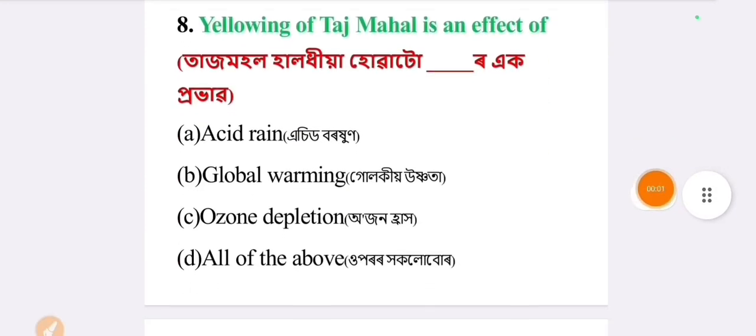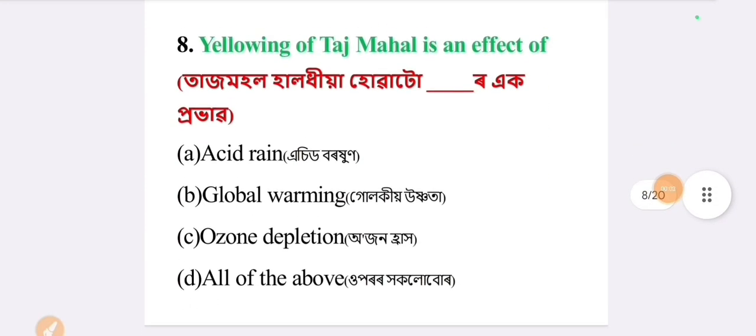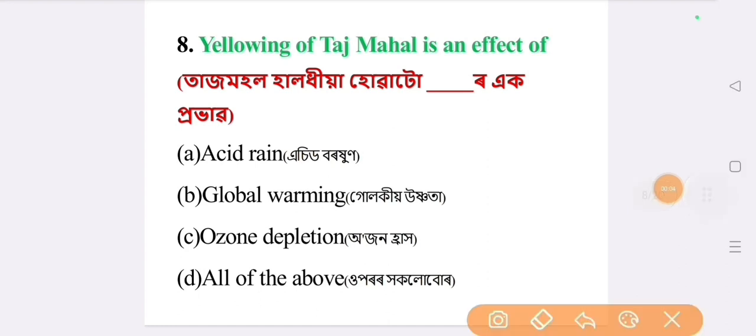Next question: yellowing of Taj Mahal is an effect of. The answer is option A: acid rain.